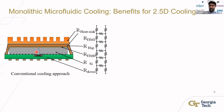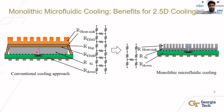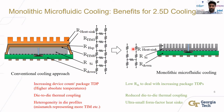Monolithic microfluidic cooling has been proposed for single-die systems. Applying that approach to a 2.5D device — etching heat removal channels directly onto the back side of each silicon die — not only reduces thermal resistive paths but also cuts down thermal coupling paths. This makes monolithic microfluidic cooling a promising technique for 2.5D devices, addressing increased package TDP through reduced thermal resistance while enabling higher compute density.